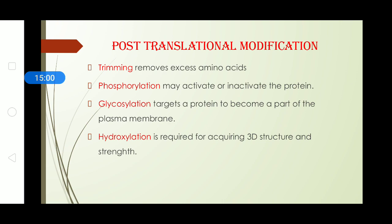So what happens is that trimming the first process. In trimming what happens if there are certain extra amino acids attached to the protein they are cleaved off. The phosphorylation. Many a time it happens that the proteins are active or inactive depending upon the addition of phosphorous to their terminal chain part. In this case either to activate or to inactivate phosphorous is added.